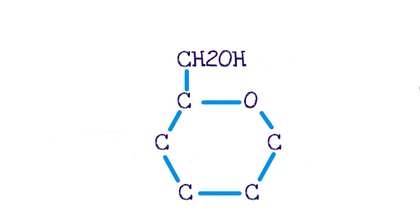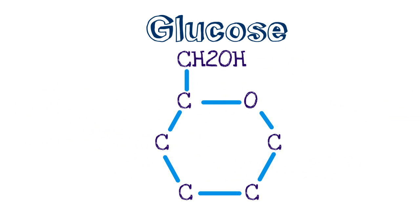First, let's identify the molecule that enters the glycolysis pathway. The first molecule that enters is glucose. Glucose is a six-carbon molecule, pictured here as a hexagon. It's important to memorize and understand this shape because all future molecules in glycolysis are derivatives of the glucose molecule — a six-carbon, hexagon-shaped molecule.